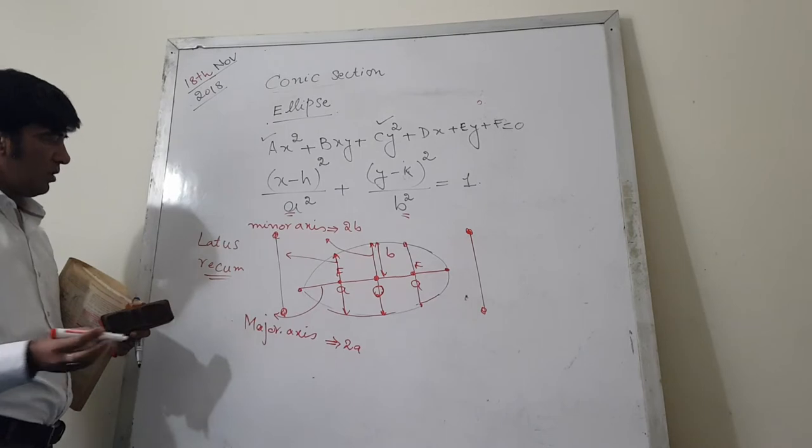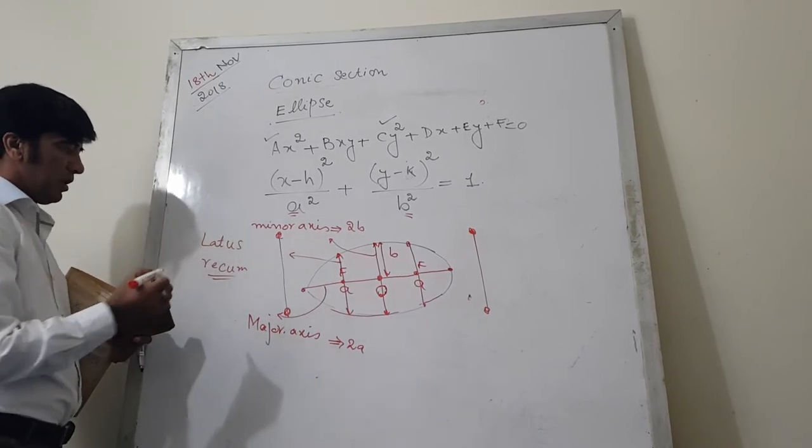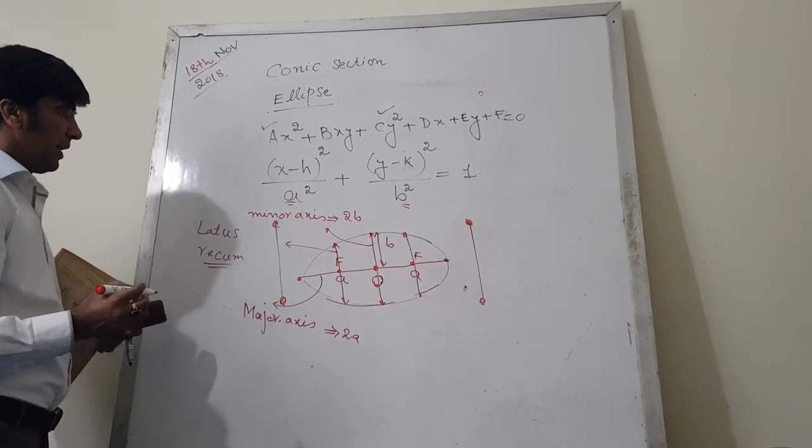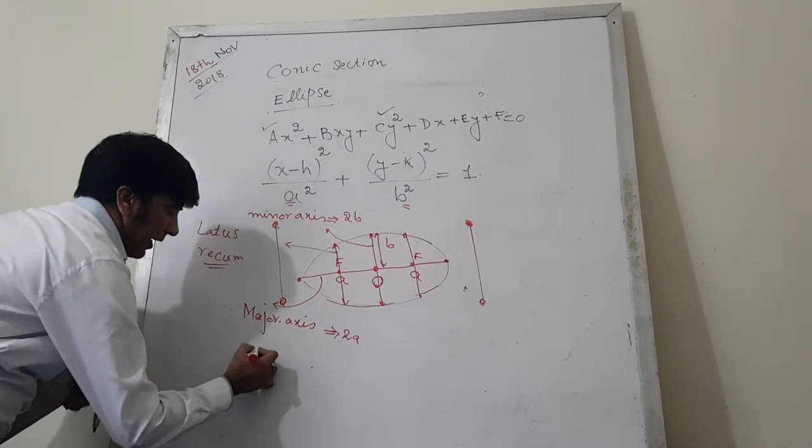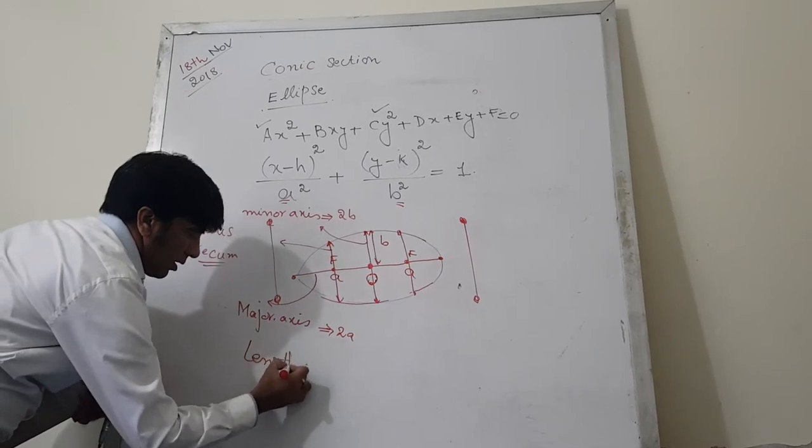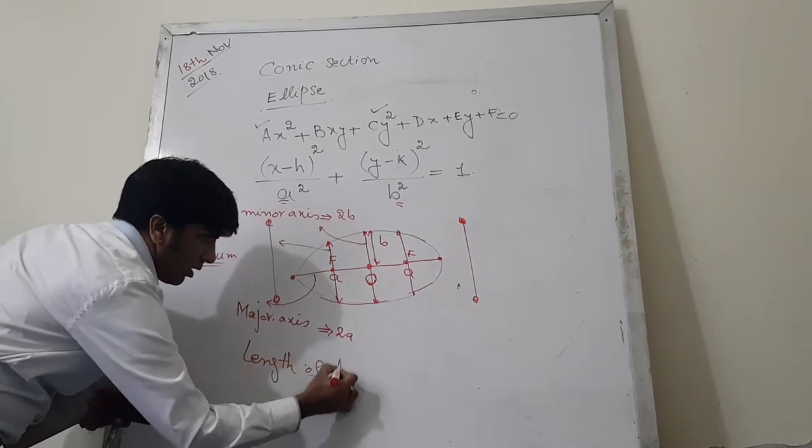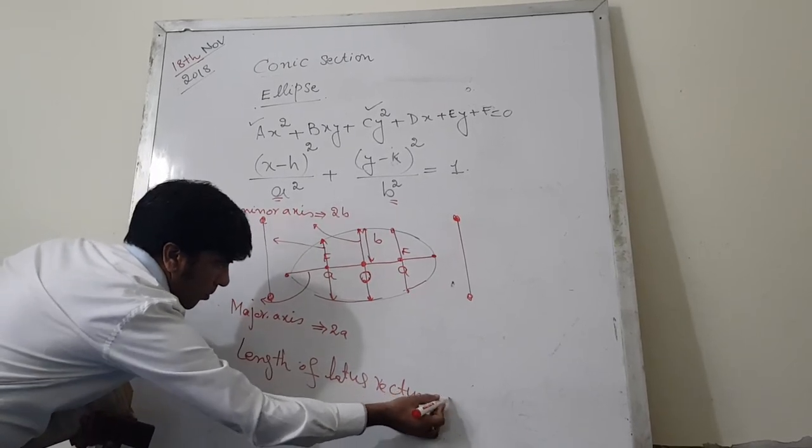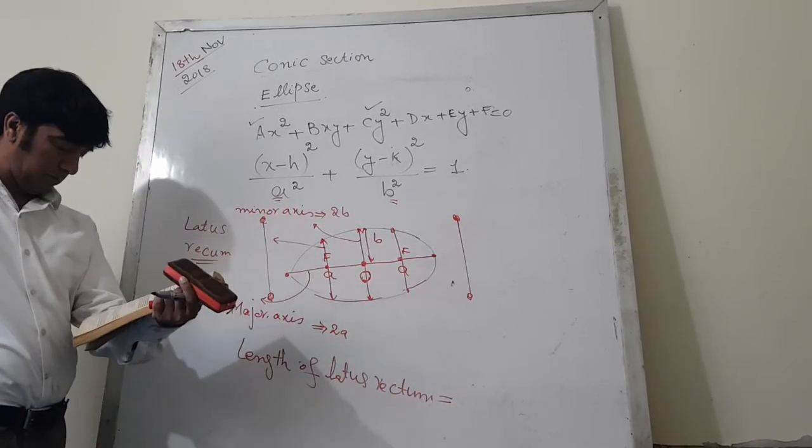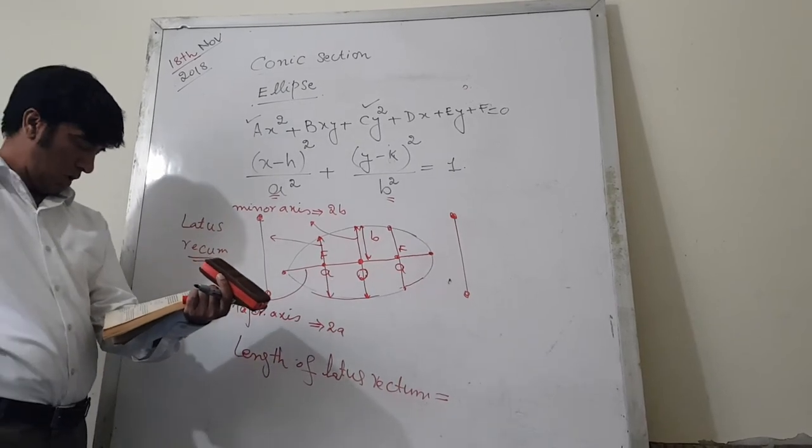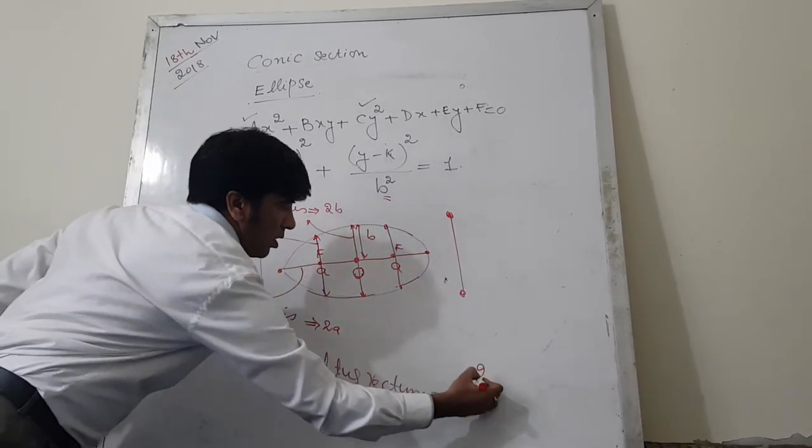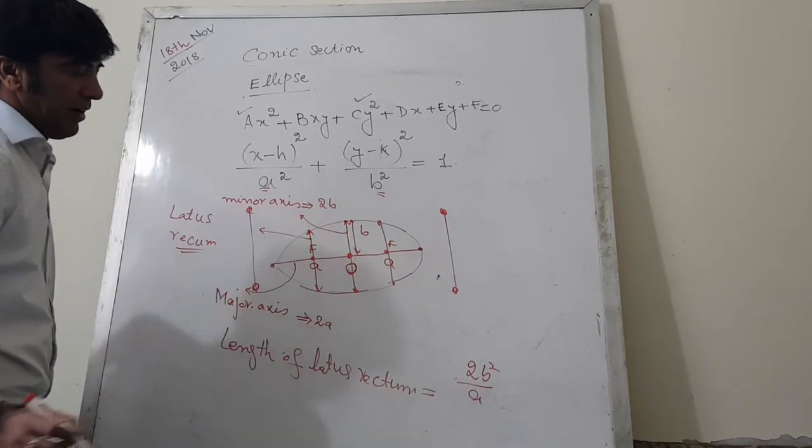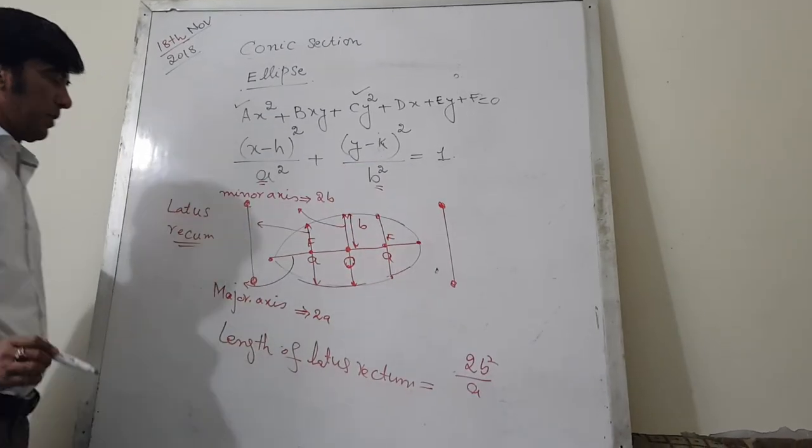And now I can tell you how do we calculate the length of latus rectum. The length of latus rectum can be calculated by: length of latus rectum is 2b²/a, and b and a you can find from this expression.